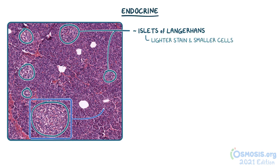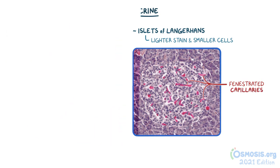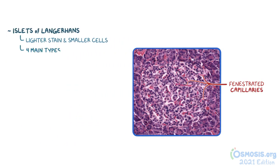When we increase the magnification to 20x, we can see the fenestrated or perforated capillaries within the islets as well. The islets of Langerhans consist of four main types of cells, but they cannot be easily distinguished from one another on slides stained with H&E.